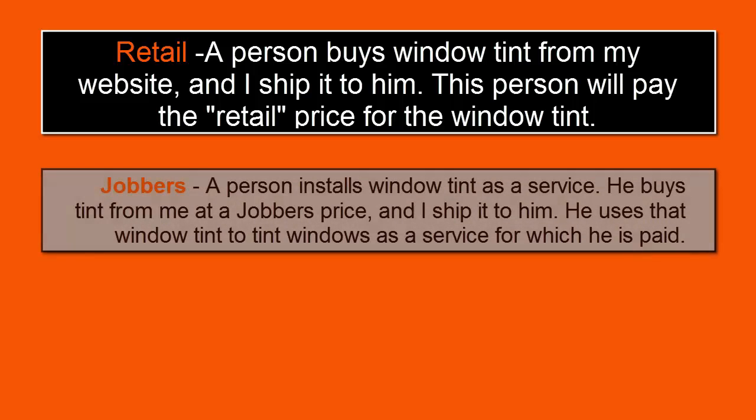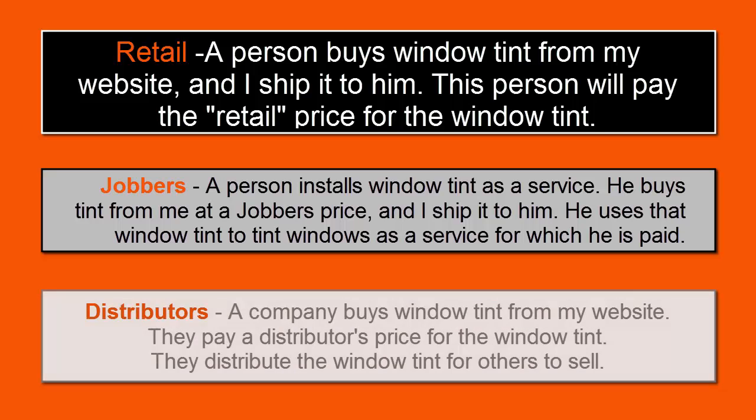The second category are jobbers. Jobbers install window tint as a service. This group buys window tint from my website and then installs the tint, for which they are paid for their service. The third category are distributors. Distributors buy tint from my website and in turn distribute the window tint for others to sell.